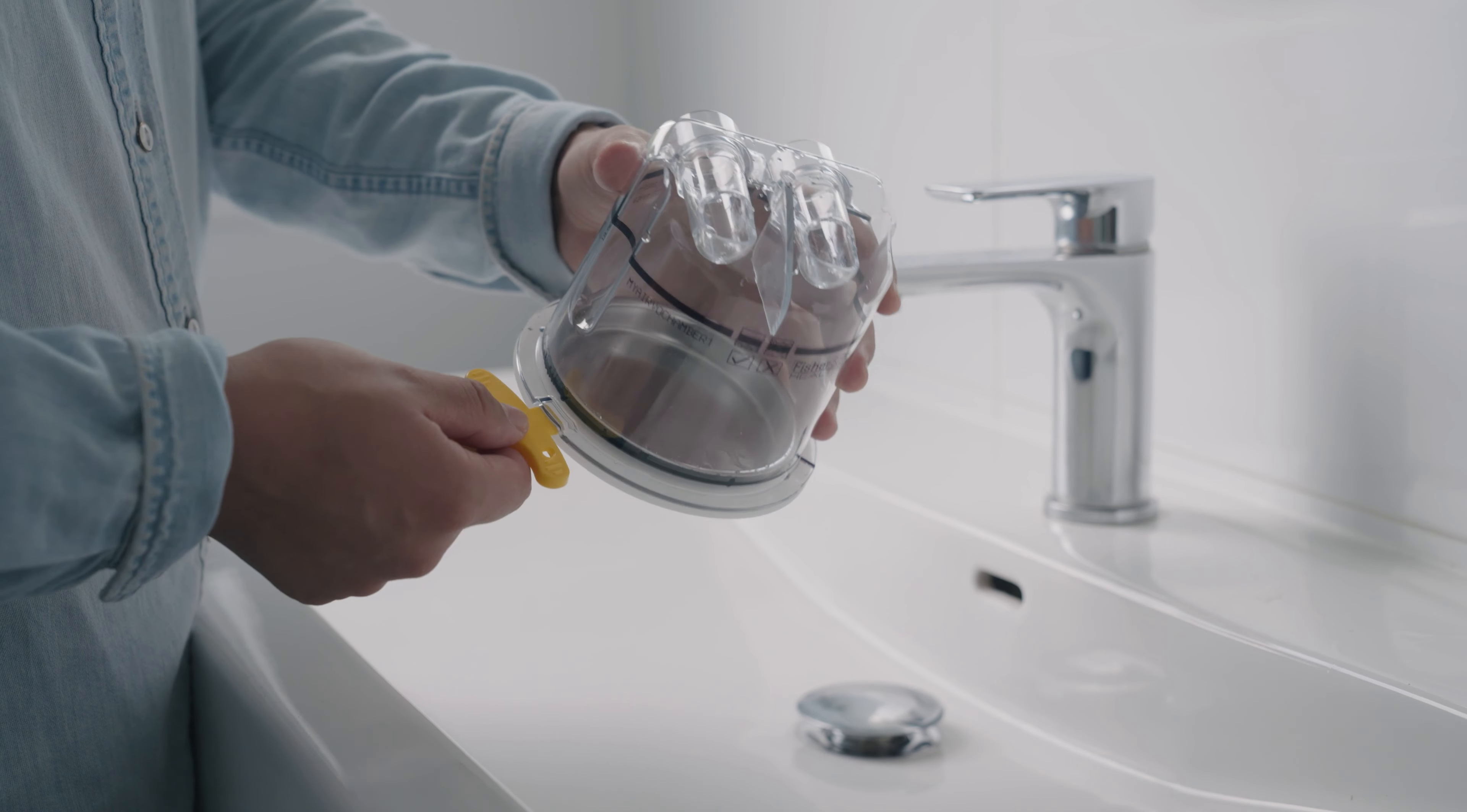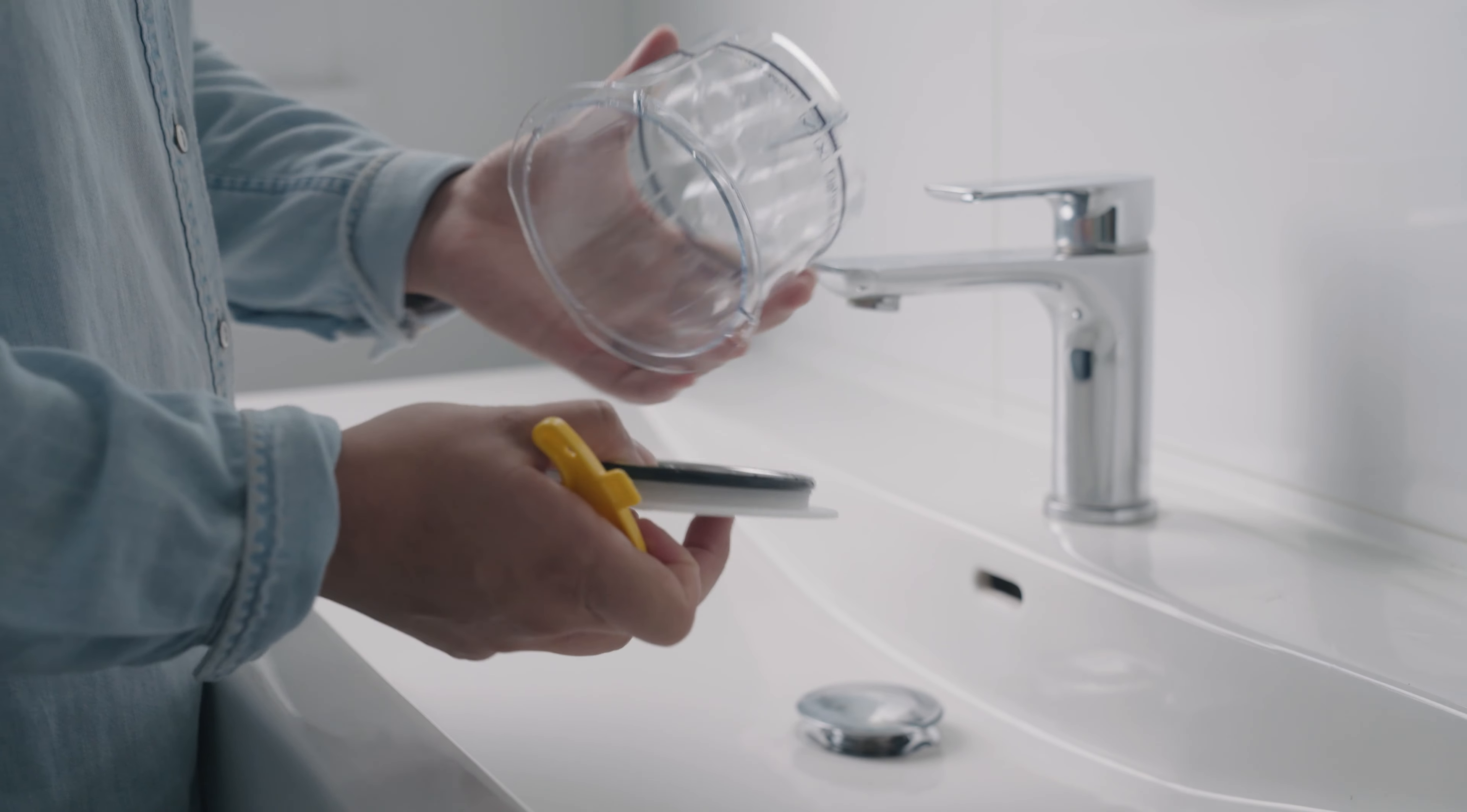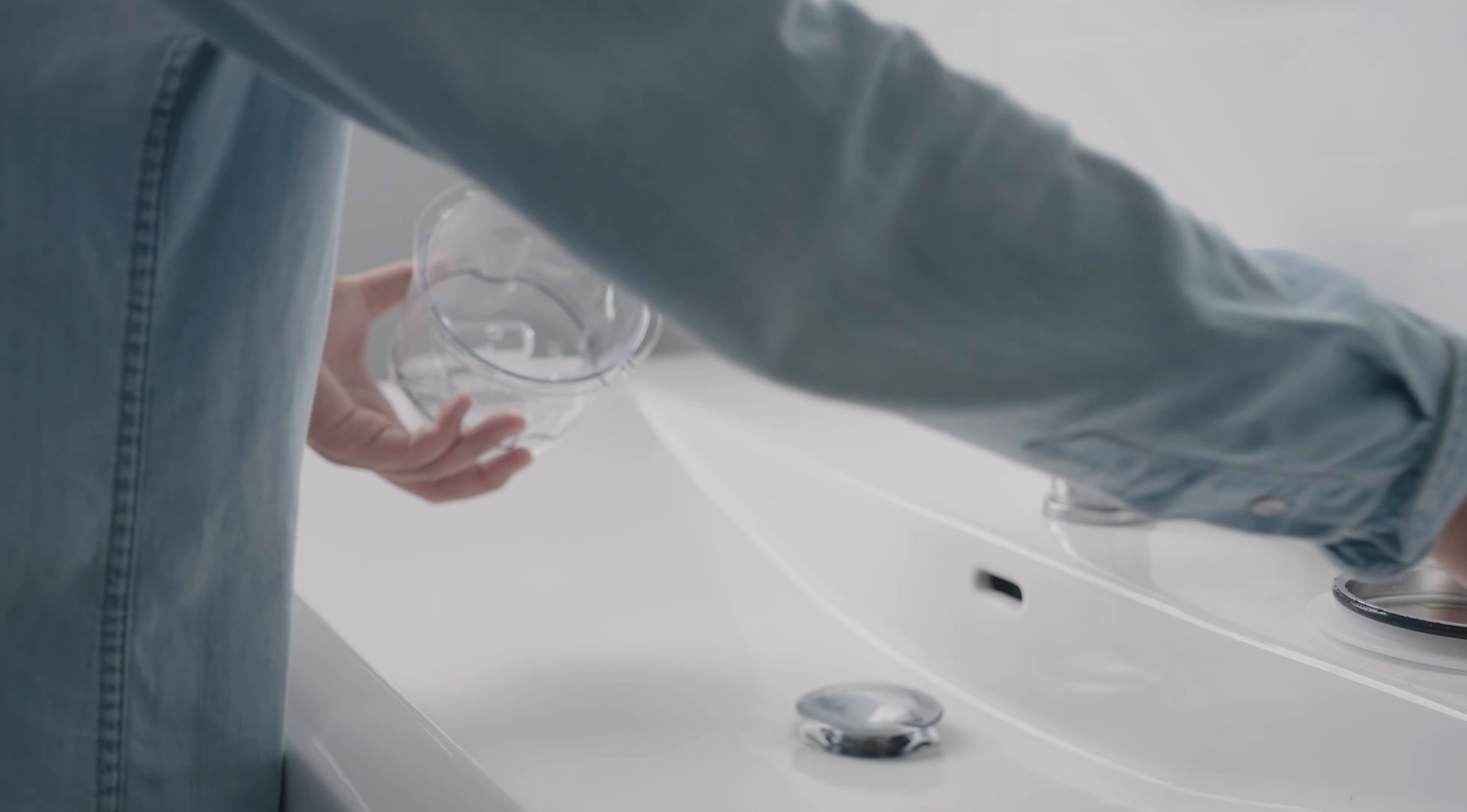Before you first use the Maiva reusable chamber, separate the chamber from the base. Insert the chamber removal tool into one of the slots and twist to open.